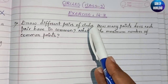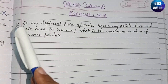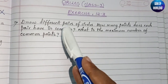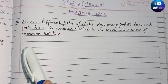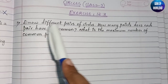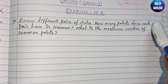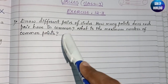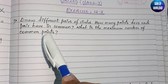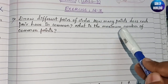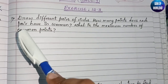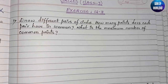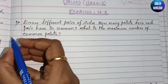The first question is: draw different pairs of circles. Pairs means two circles. We need to tell how many points does each pair have in common, and what is the maximum number of common points.